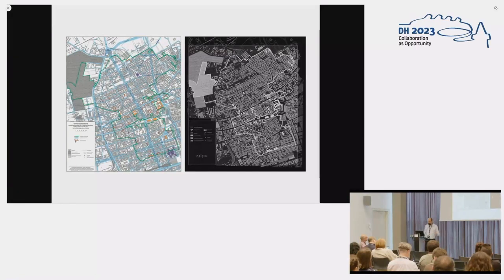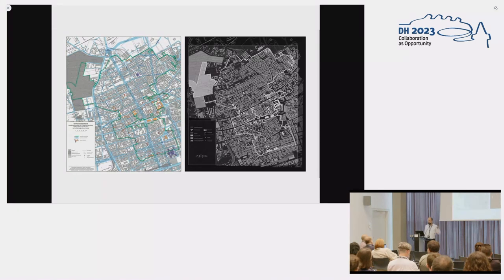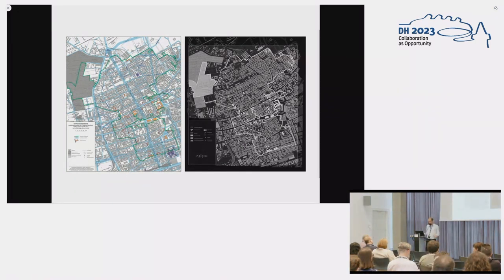I want to focus on three cases. First, deep mapping in digital literary studies and projects we conducted. I will present what our team, New Panorama of Polish Literature, which works at the Institute of Literary Research Polish Academy of Sciences, found useful in topographic literature research and what criteria we adopted during the selection.